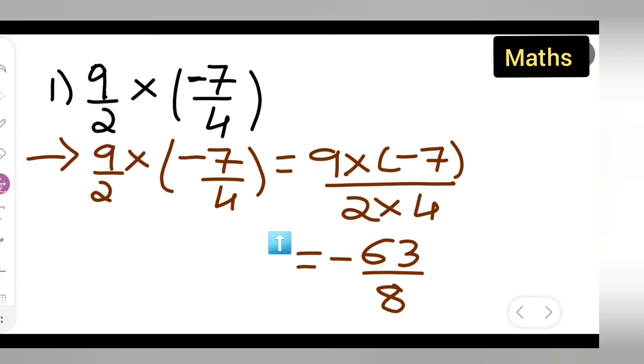So I hope you have understood how to find the product of 9 upon 2 multiplied by minus 7 upon 4. The product is minus 63 upon 8. So I hope you have understood and thanks for watching.